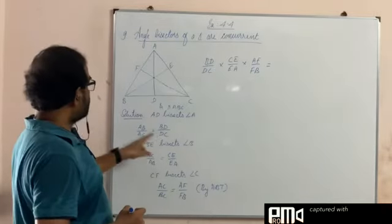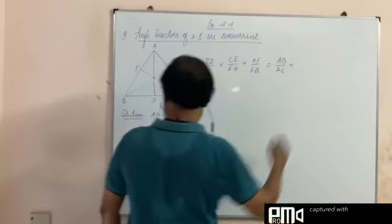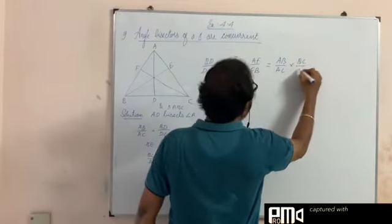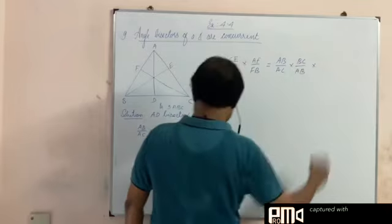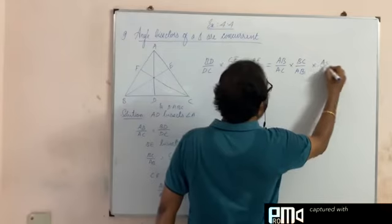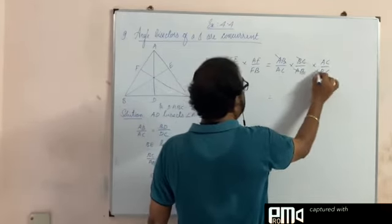What is BD by DC? AB by AC. AB by AC into BC by AB into AC by BC.